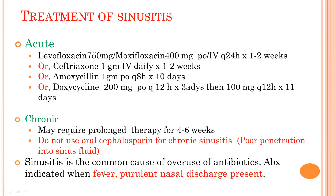Treatment of sinusitis: for acute bacterial sinusitis, characterized by purulent discharge and fever, the drug of choice is levofloxacin 750mg or moxifloxacin 400mg — either oral or IV, once daily for 1–2 weeks. Or ceftriaxone 1g IV daily for 1–2 weeks. Amoxicillin 1g 8-hourly for 10 days. Doxycycline for 10 days. Chronic sinusitis may require prolonged therapy up to 4–6 weeks. Oral cephalosporins should be avoided due to poor penetration into sinus fluid. Sinusitis is a common cause of antibiotic overuse — antibiotics are indicated only when there is fever and purulent nasal discharge; otherwise, antibiotics are not indicated.